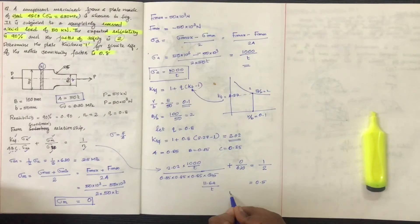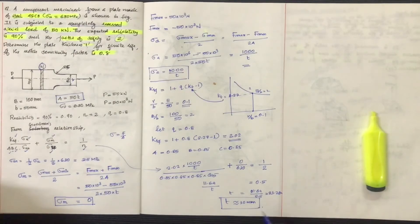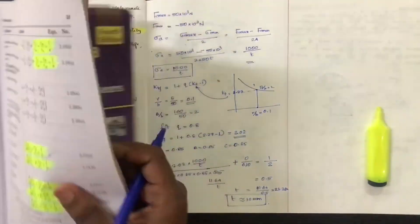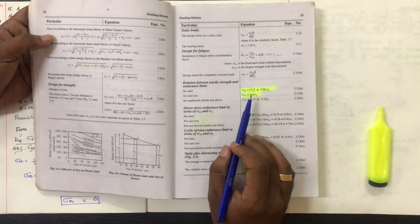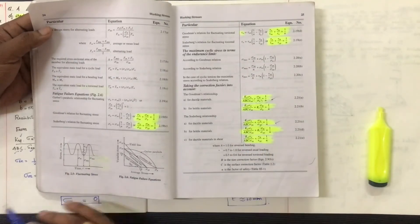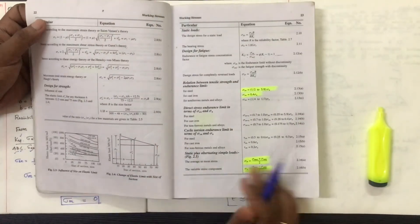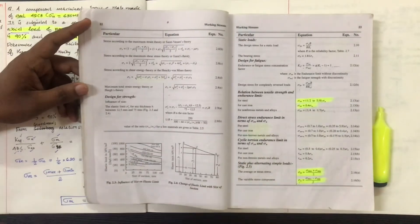Solving the equation gives 11.64/T equals 0.5, so T equals 23.28 mm. Note that Sigma YP was not separately provided; the Soderberg equation used Sigma U = 630 MPa as given. This is the final solution for the plate thickness T.